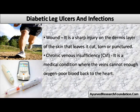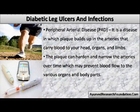A wound is a sharp injury on the dermis layer of the skin that leaves it cut, torn, or punctured. Chronic venous insufficiency is a medical condition where the veins cannot adequately return blood back to the heart.